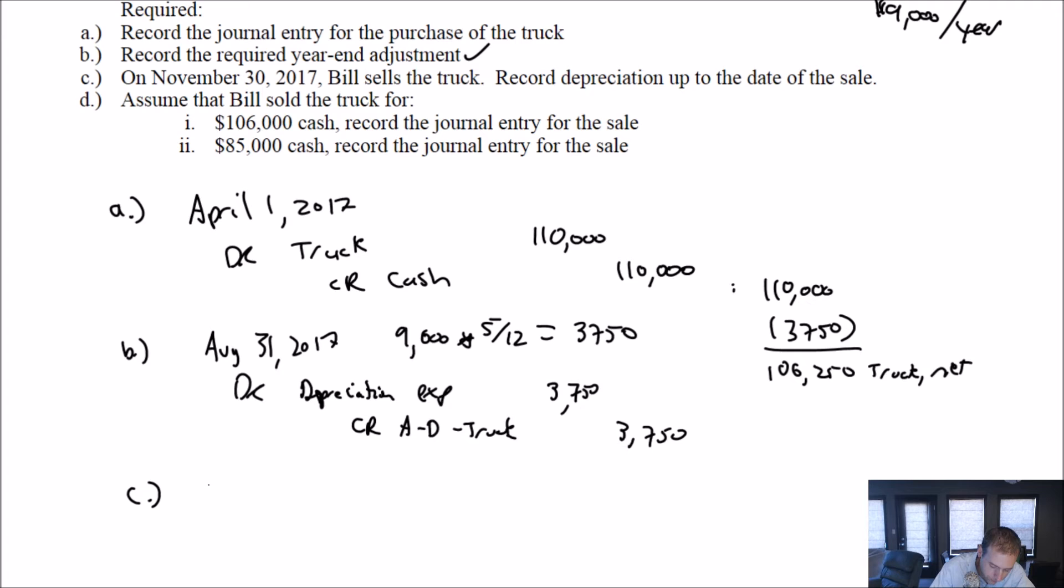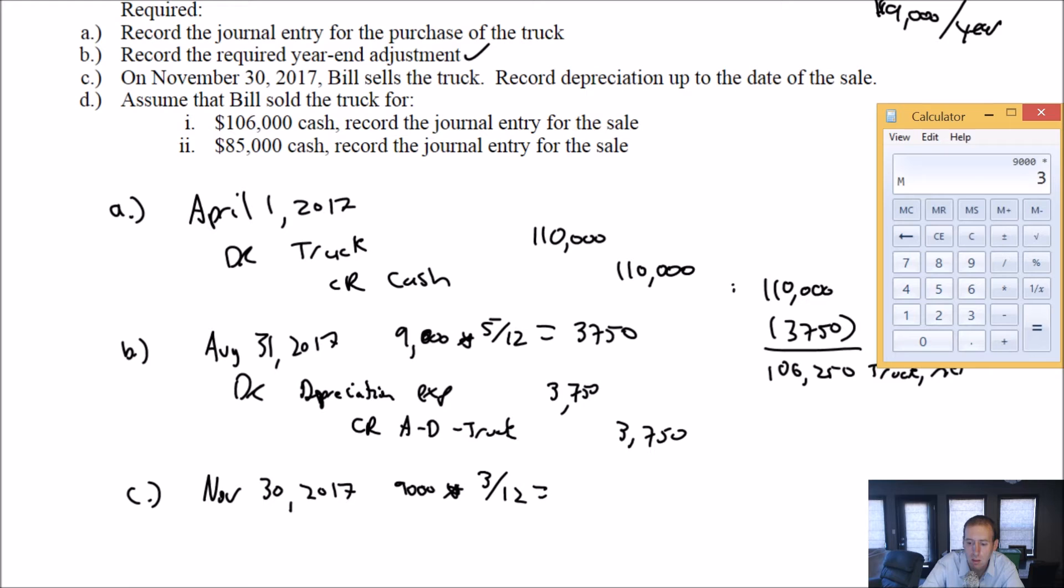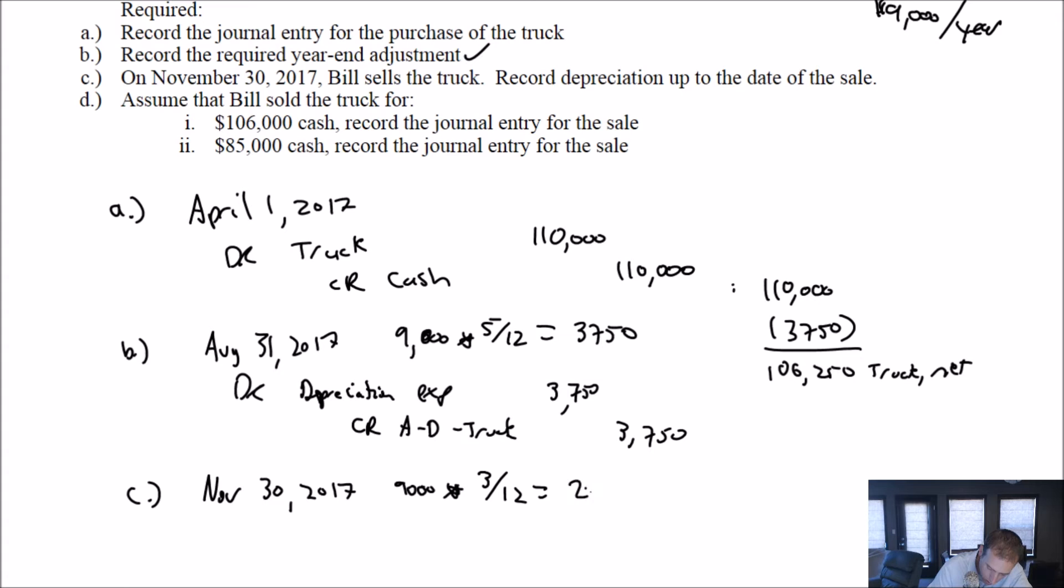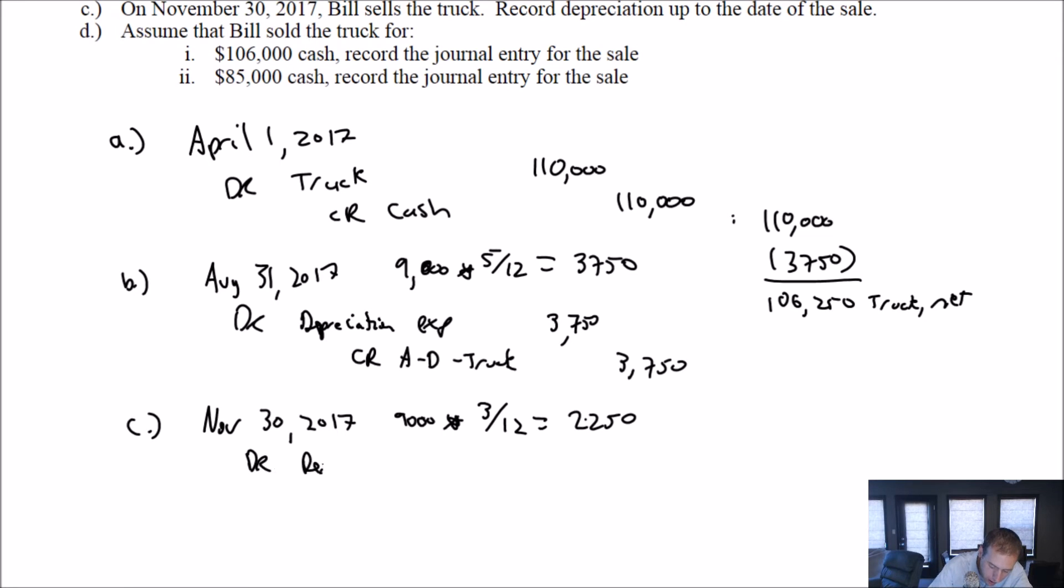November 30th, 2017, we have an additional three months of amortization. It was $9,000 for a year. We're doing three twelfths of a year. $2,250 in depreciation. I debit depreciation expense. We always have to depreciate an asset up to the date of the sale. We credit accumulated depreciation on our truck for $2,250.